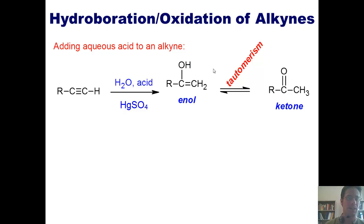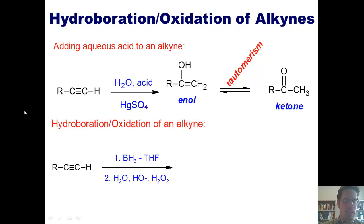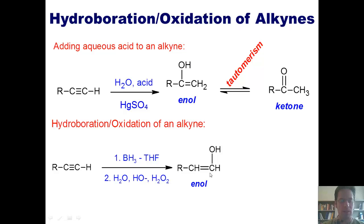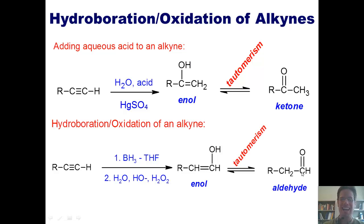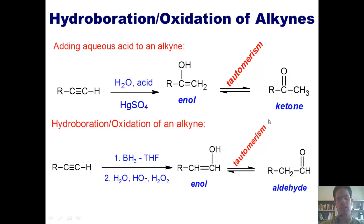If I take an alkyne and treat it under hydroboration oxidation conditions, what forms is an enol where the OH is put on the external carbon in the original carbon-carbon triple bond — the analogous anti-Markovnikov product. This enol instantly tautomerizes to form an aldehyde. An aldehyde is different from a ketone because it has a hydrogen coming off one side of the carbon that's doubly bonded to oxygen. The equilibrium strongly favors the aldehyde product.